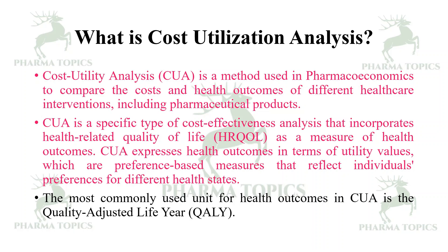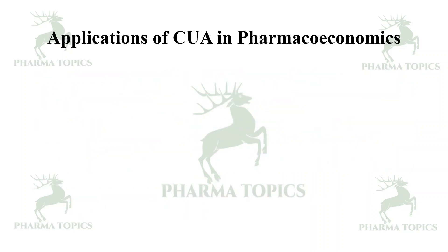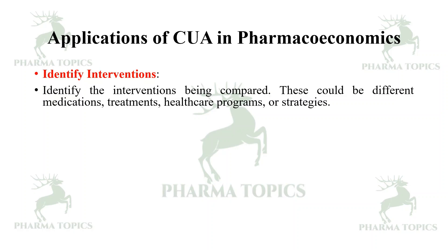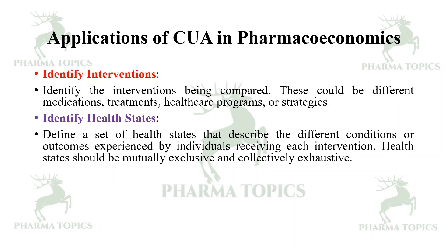The most commonly used unit for health outcomes in cost utility analysis is quality-adjusted life years (QALYs). Regarding the applications of CUA: first, identify the interventions being compared — these could be different medications, treatments, healthcare programs, or strategies. Then identify the health states — define a set of health states that describe the different conditions or outcomes experienced by individuals receiving each intervention.